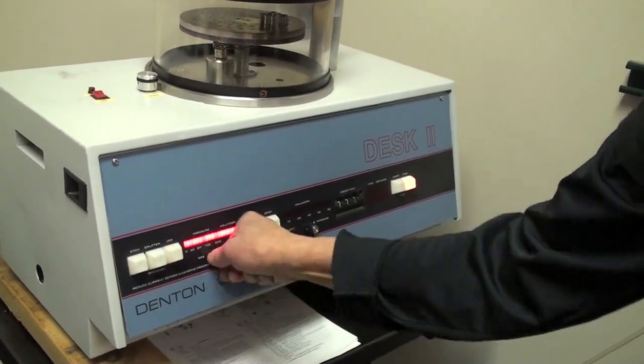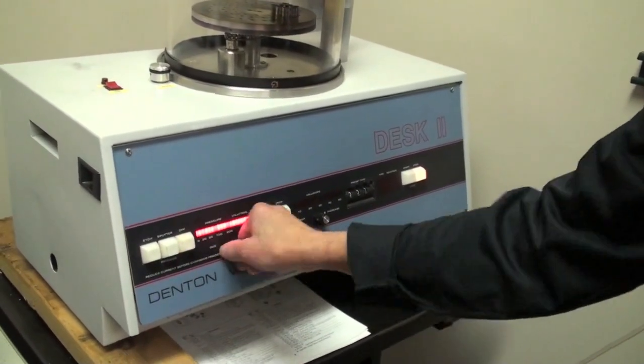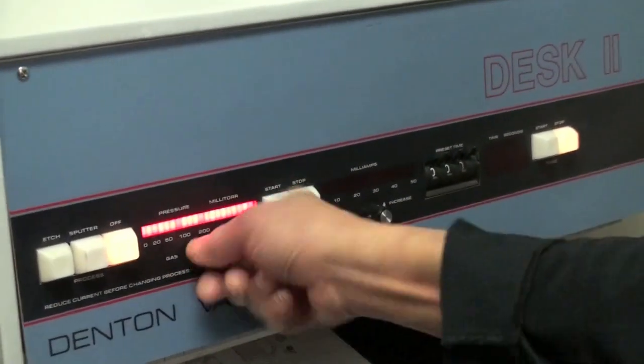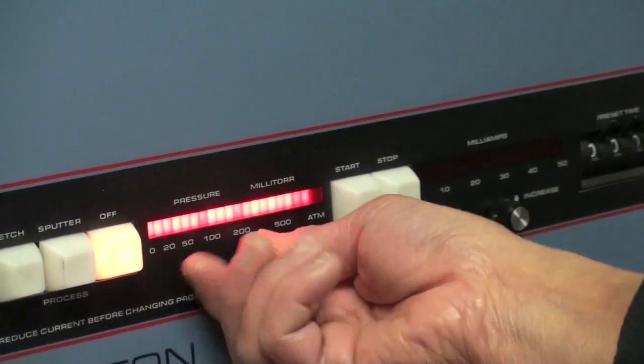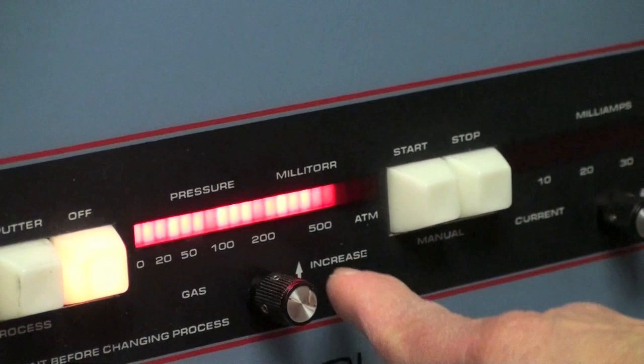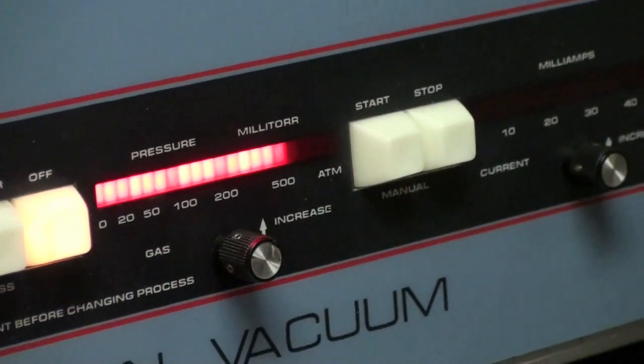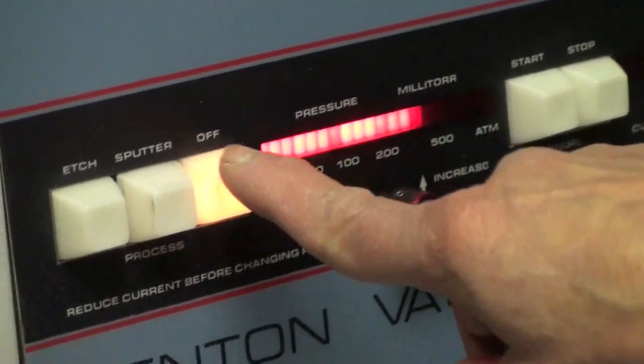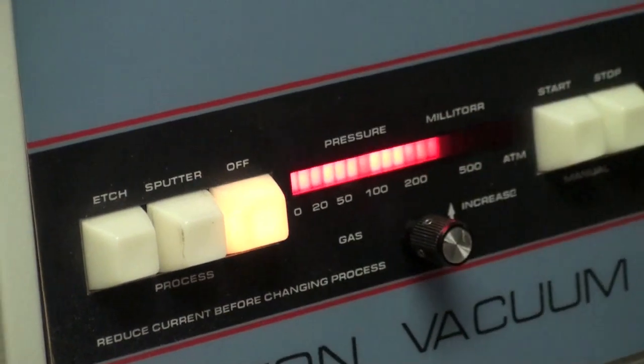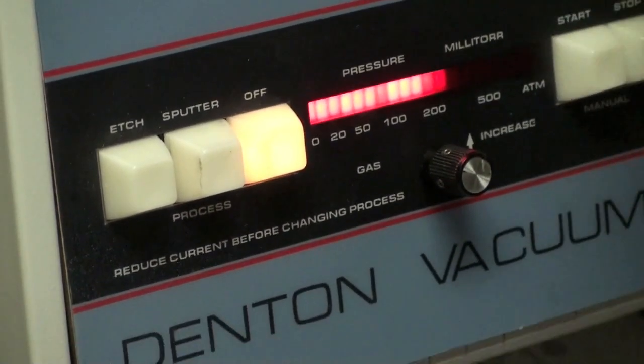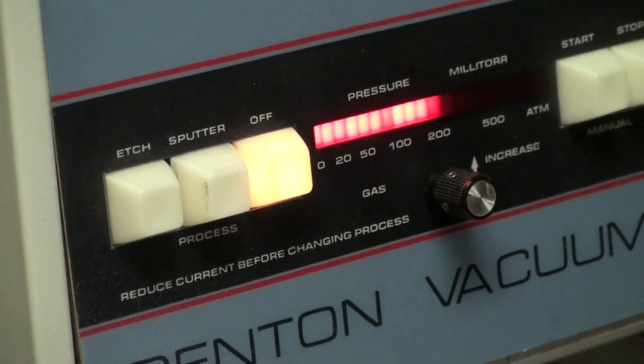This is needle valve, so you have to manually open so that the gas will flow in. So you're turning to the left to open the needle valve. Left open, right close. Whatever it is. Now, if this one is off, it means that there is no channel of gas going to the chamber.